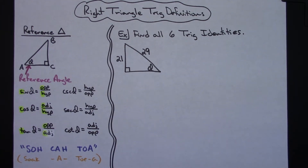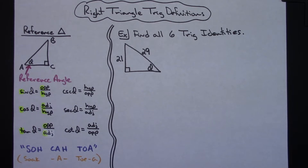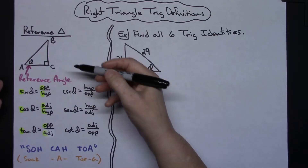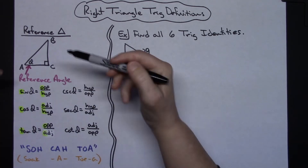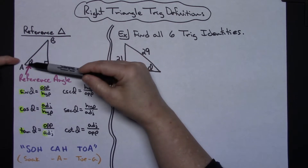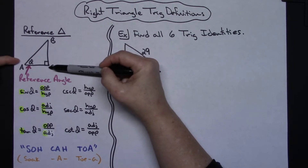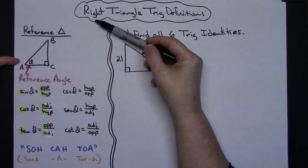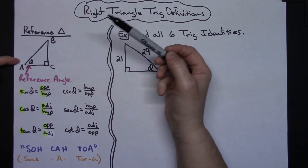In this video I'm going to take a look at some right triangle trig definitions. These would be introduced to you very early on as soon as you begin studying right triangle trig. In order to have these definitions I need a reference triangle, and it needs to be a right triangle because these definitions only work with a right triangle.